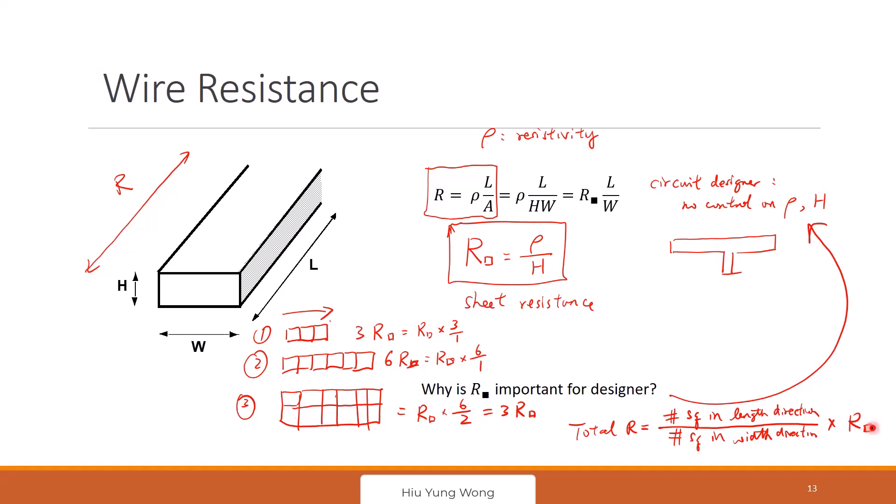And the reason we can abstract to this just because we cannot control H, cannot control resistivity, we lump it into R square. And the data sheet is going to tell us the design rule. You tell metal one, metal two, up to metal ten what are the resistance per square.